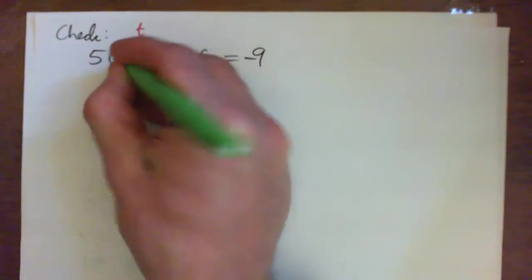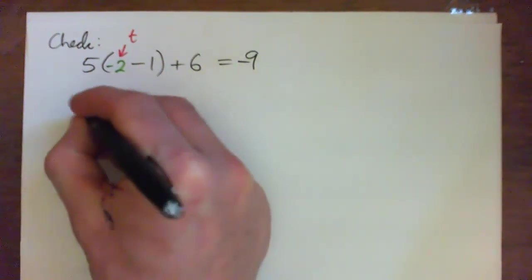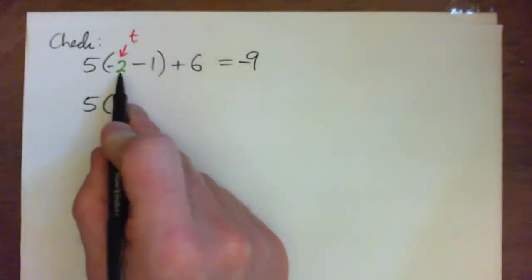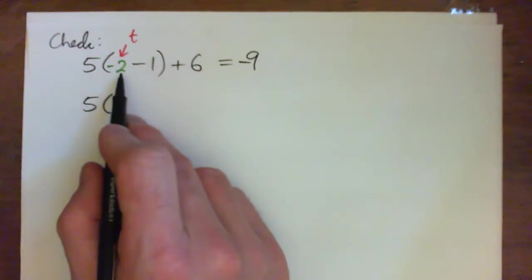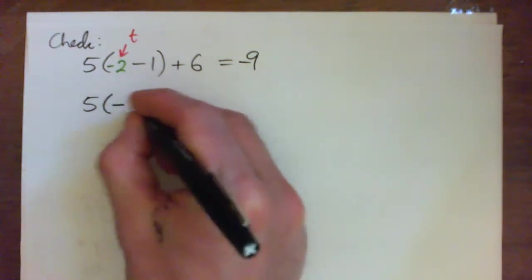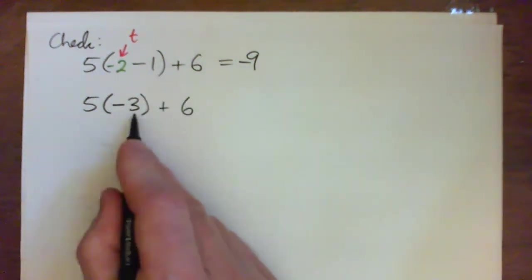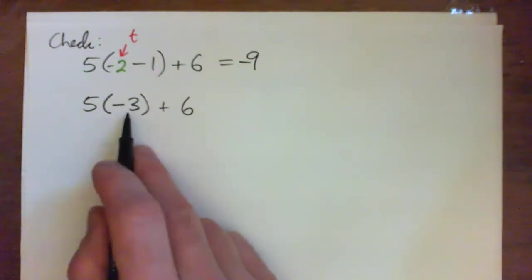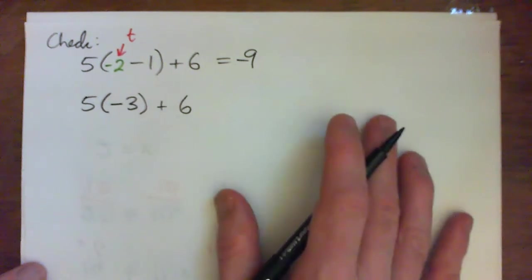So plug negative 2 in for t. And on the left we have 5 times negative 2 minus 1 is what? I'm in debt by $2, I subtract $1, now I'm in debt by $3. 5 times negative 3 plus 6. 5 negative 3s. 5 times negative 3 bad guys.